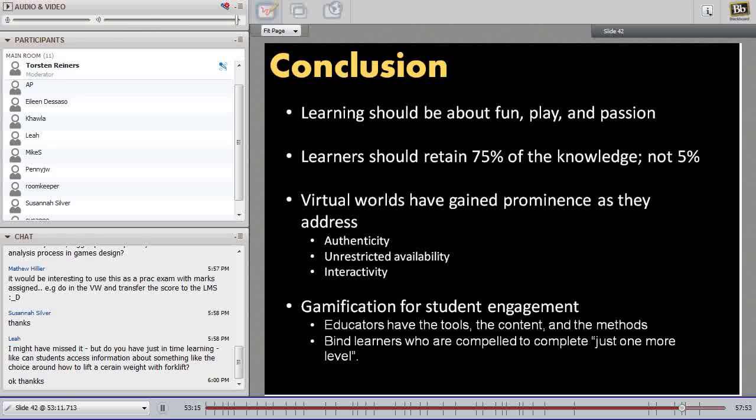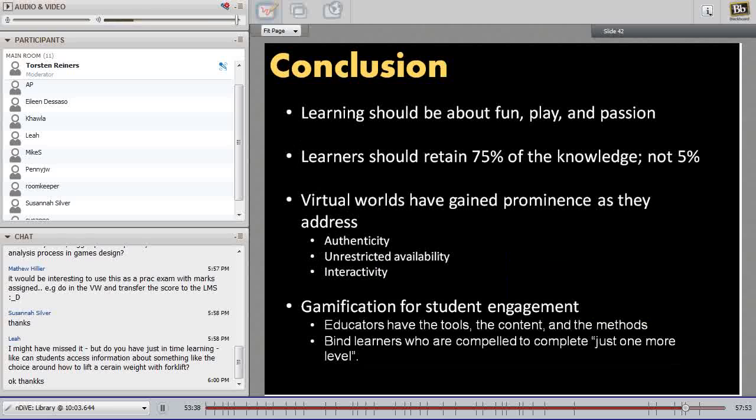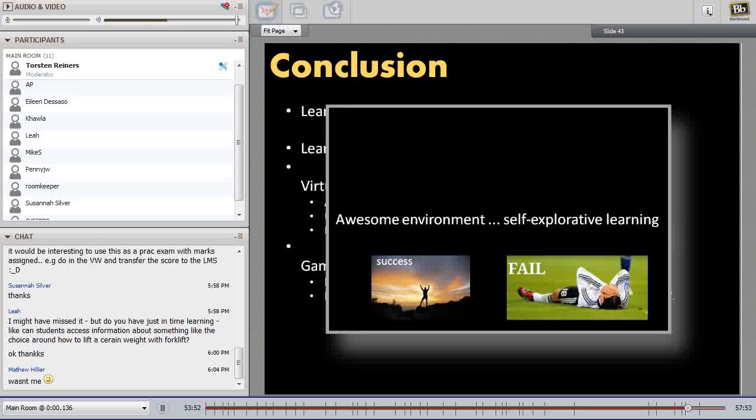For the project, we want that fun comes back. That's why we want to use technology like the Oculus Rift as head-mounted devices. We want to make it encouraging with the sounds and the feeling to be there. So authenticity, immersion is important. We want to retain the knowledge and don't lose it again. Virtual worlds for prominence and authenticity and restricted availability and interactivity. Gamification for the fun. What's most important for us is that you get an awesome environment that you want to go to for self-explorative learning. And you can succeed or you can fail. And the failure is for us the preferred part because we want to encourage to get perfect and not just the 50% to pass. We want that the student gets 100% right and survives without any injuries.